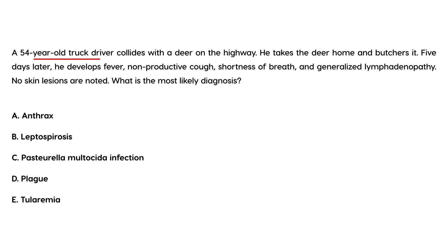Clinical vignette two: A 54-year-old truck driver collides with a deer on a highway, takes the deer home, and butchers it. Five days later, he develops fever, nonproductive cough, shortness of breath, and generalized lymphadenopathy — no skin lesions. Without the history, you'd just say pneumonia or some infection. But the history reveals contact with a deer five days earlier, which points to tularemia, especially if in an endemic area.